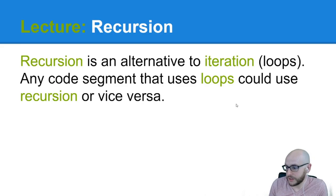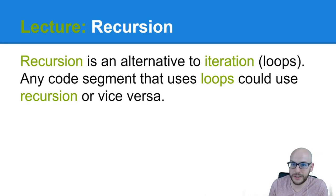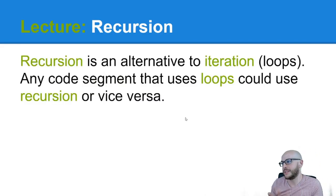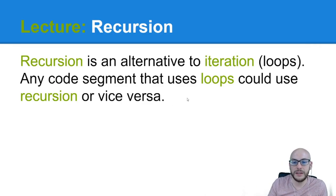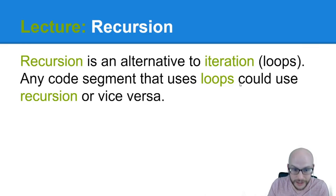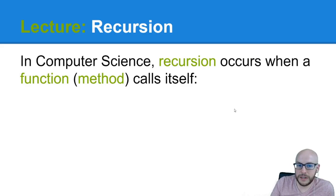Recursion is an alternative to iteration — we're talking loops: for loops, while loops, do-while loops. Yes, there is something called a do-while loop in Java. Any code segment that uses loops could use recursion, or vice versa. You can use a stack data structure in conjunction with a loop and achieve the exact same things that recursion can, so this is true.